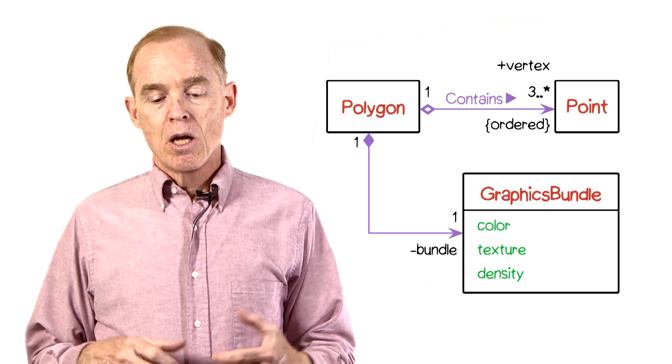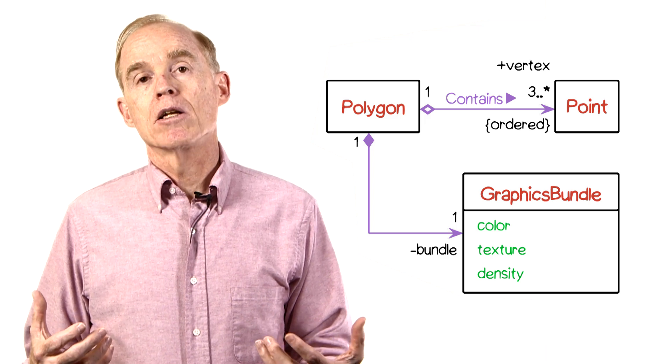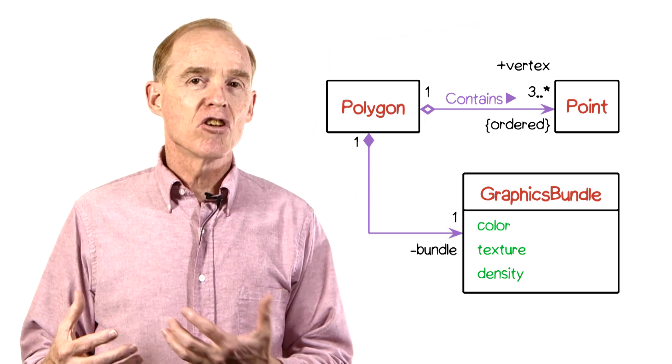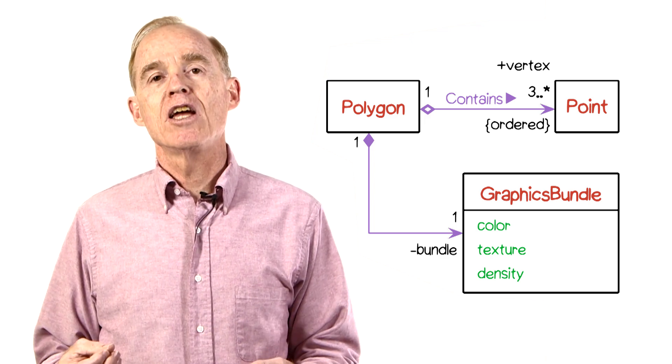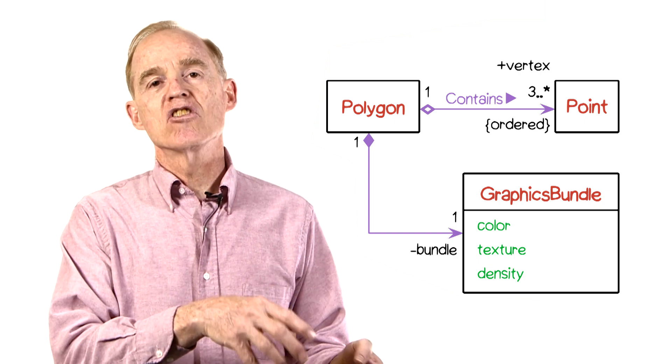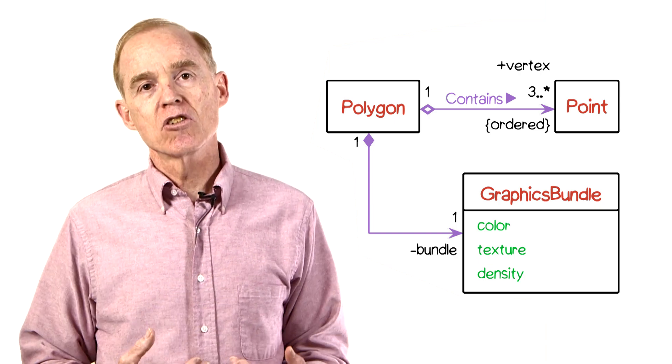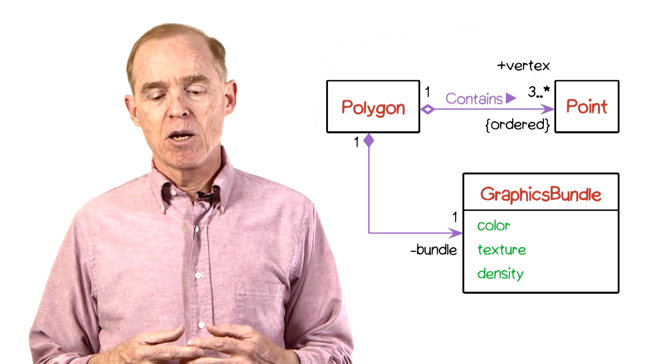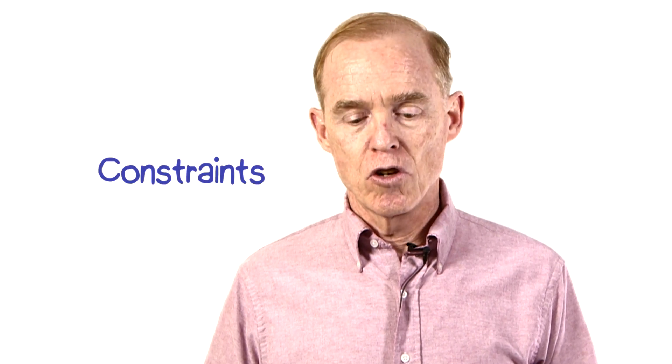Also not shown are the fact that you can express qualification. You can think of qualification as indicating what are the keys into the set of instances. We'll see an example of that in a minute. And you can express also certain constraints on the association.